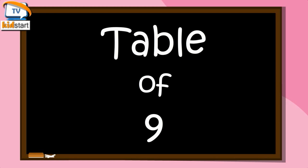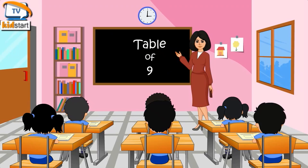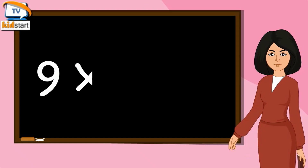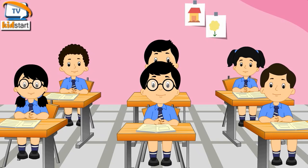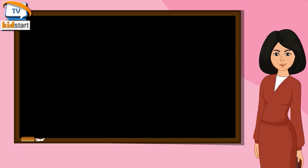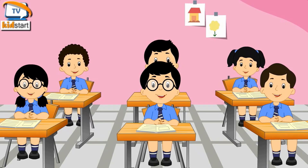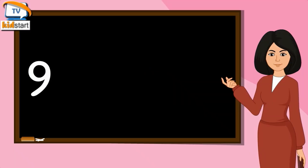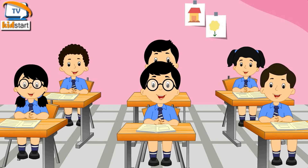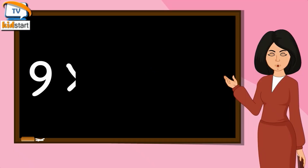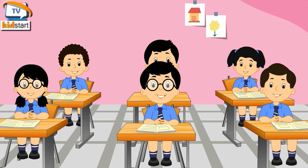Table of Nine. 9 ones are 9, 9 twos are 18, 9 threes are 27.